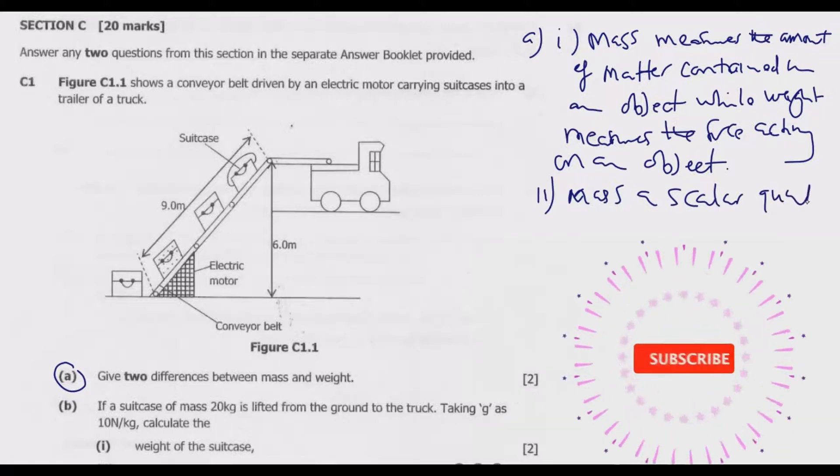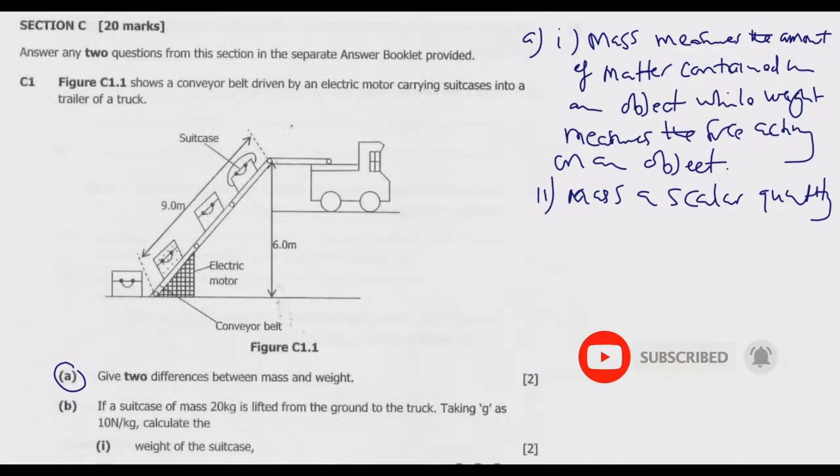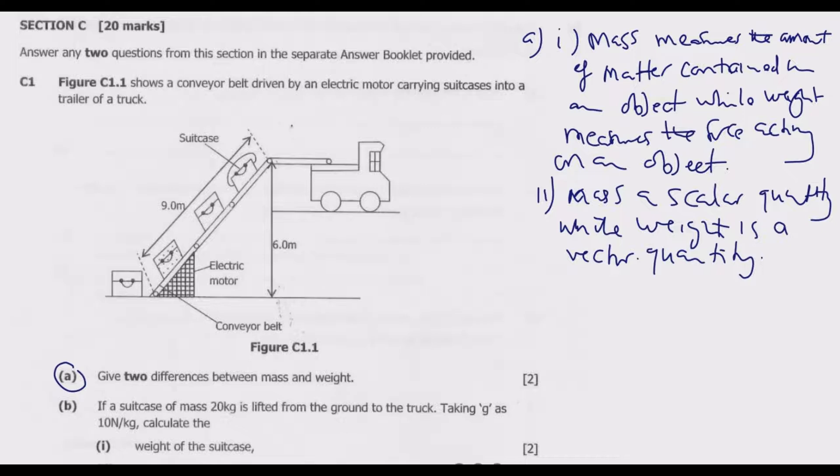Number two: mass is a scalar quantity, meaning it only has size without direction, while weight is a vector quantity. These are the key differences that you need to give.